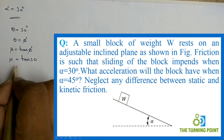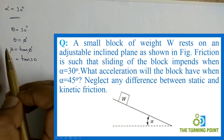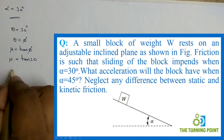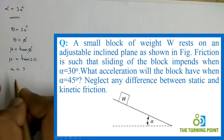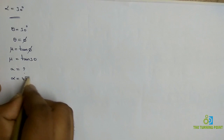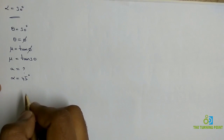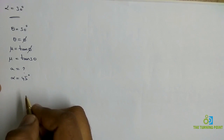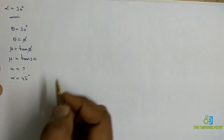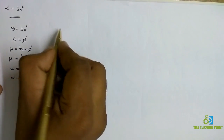The coefficient of friction is indirectly given by mentioning the 30-degree angle. The question asks: what acceleration will the block have when alpha equals 45 degrees? We neglect any difference between static and kinetic friction.